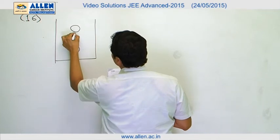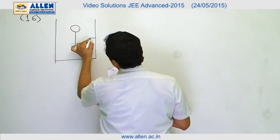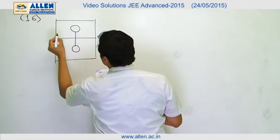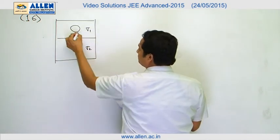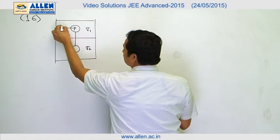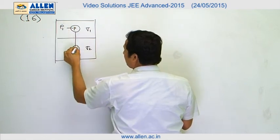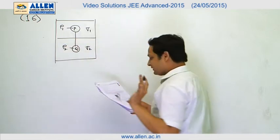They are connected by a string and we have two liquids. The density of liquid is sigma 1, here is sigma 2. Density of P is rho 1 and that of Q is rho 2, it is given to you.